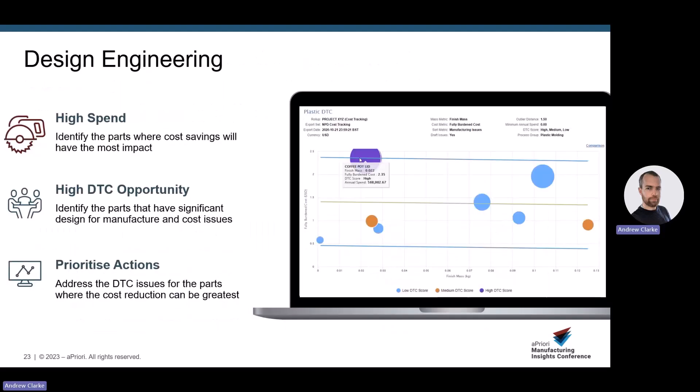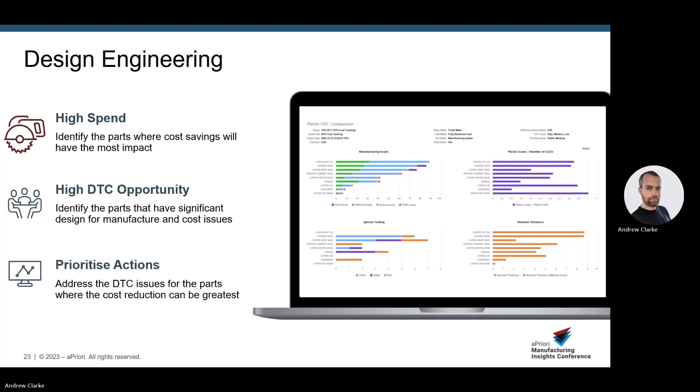We can use this data in different use cases. For example, in design engineering, we can identify design issues for the parts we expect to have the larger spend on, and dig into what those issues may be. AP Generate lends itself particularly well to this workflow as the analysis happens autonomously without the design engineer having to interact with Apriori at all until it comes time to review potentially impactful design issues.